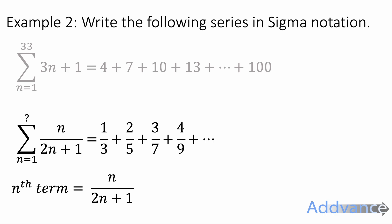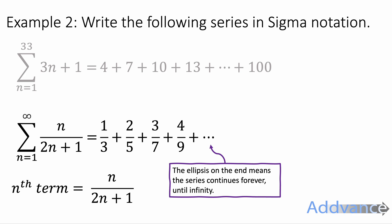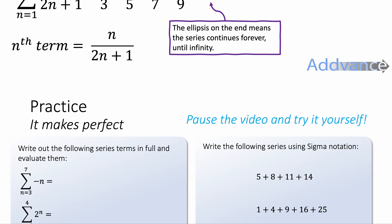The numerator is n. The denominator is 2n plus 1. So it will look like this. Sum from n equals 1 to something of n over 2n plus 1. But the ellipsis on the end means the series continues forever until infinity. So the final term is infinite. And so you just put an infinity symbol on the top. And that is the final answer.